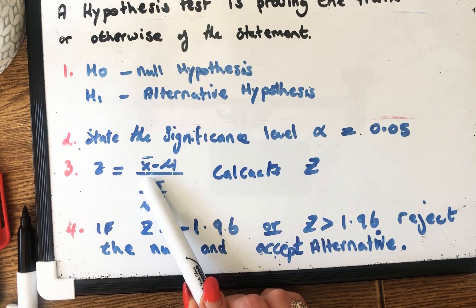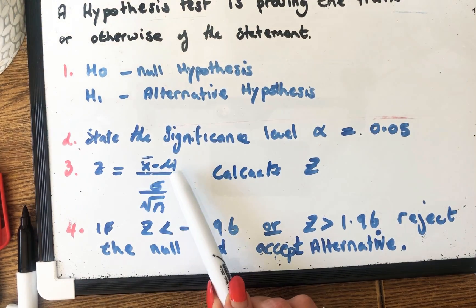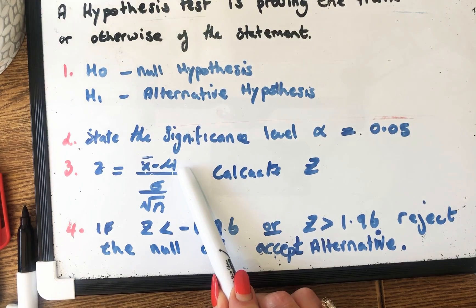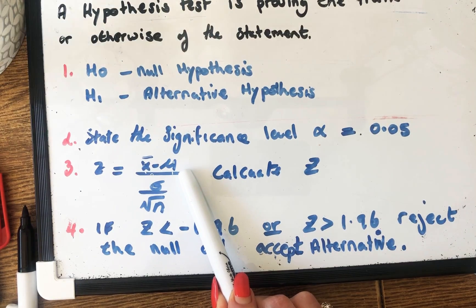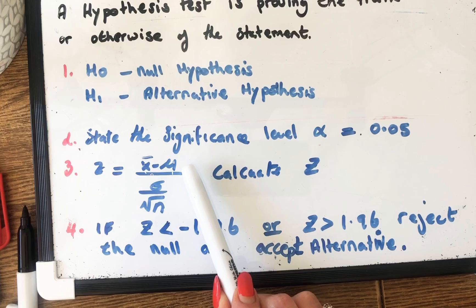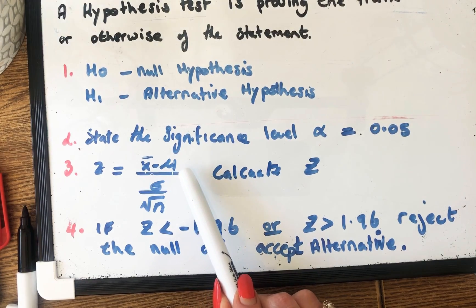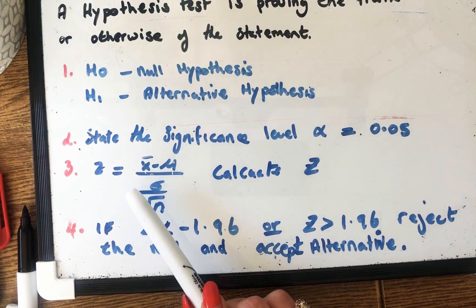So X bar is your sample mean. And your mu, that would be a new word to a lot of you, your mu is your population mean. So what are the differences between this X bar and this mu because they're both means. Well let's give an example of this.